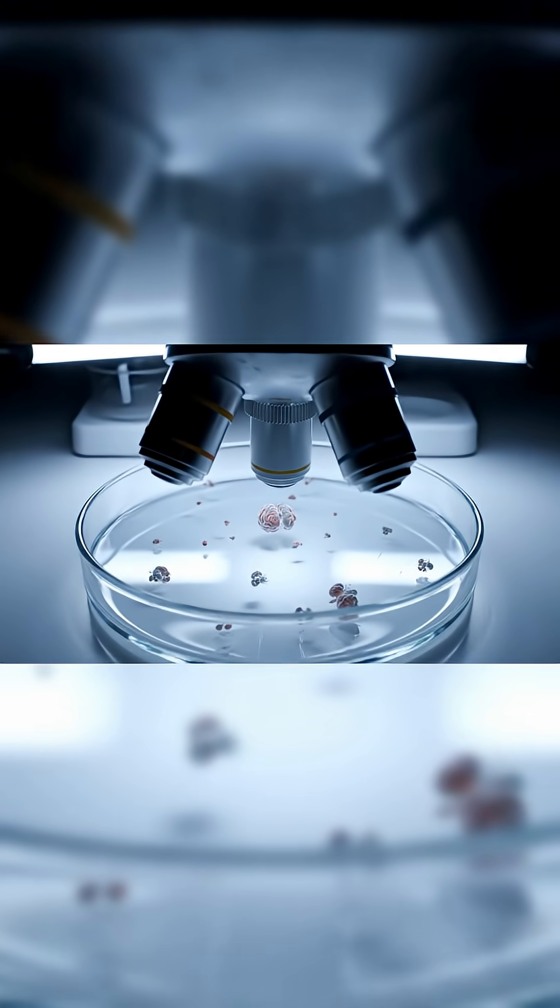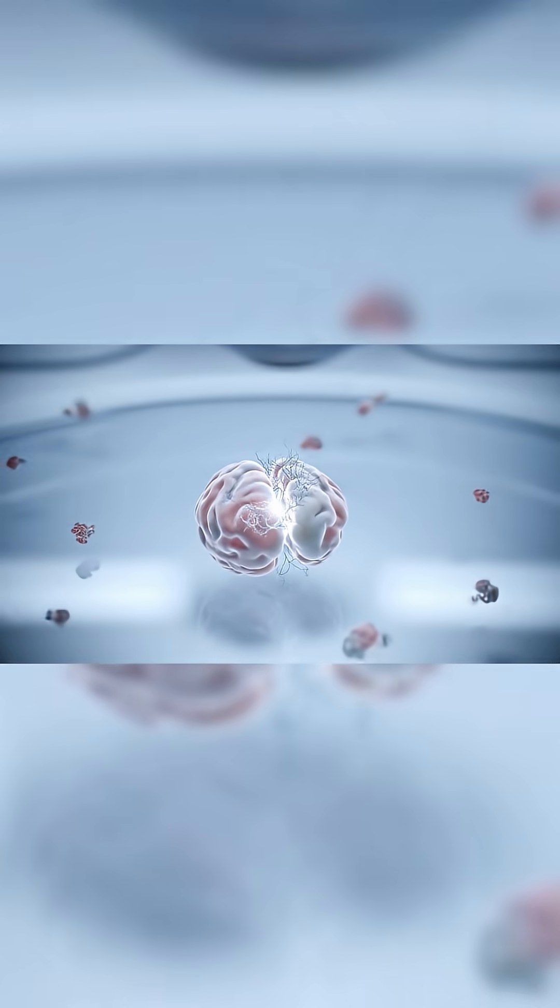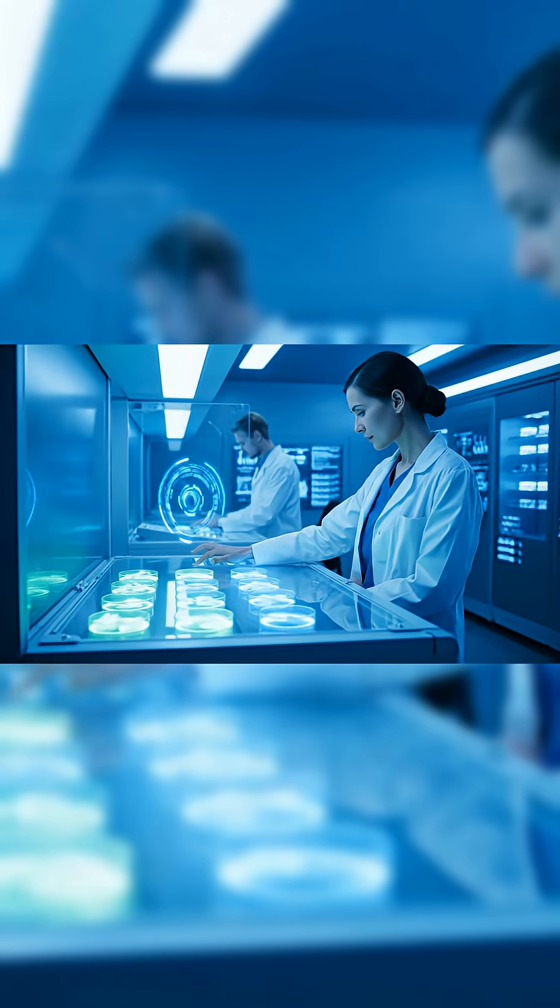Human brain organoids are small clusters of brain cells grown from stem cells. Scientists use them as models to study how the brain develops and how diseases take hold.